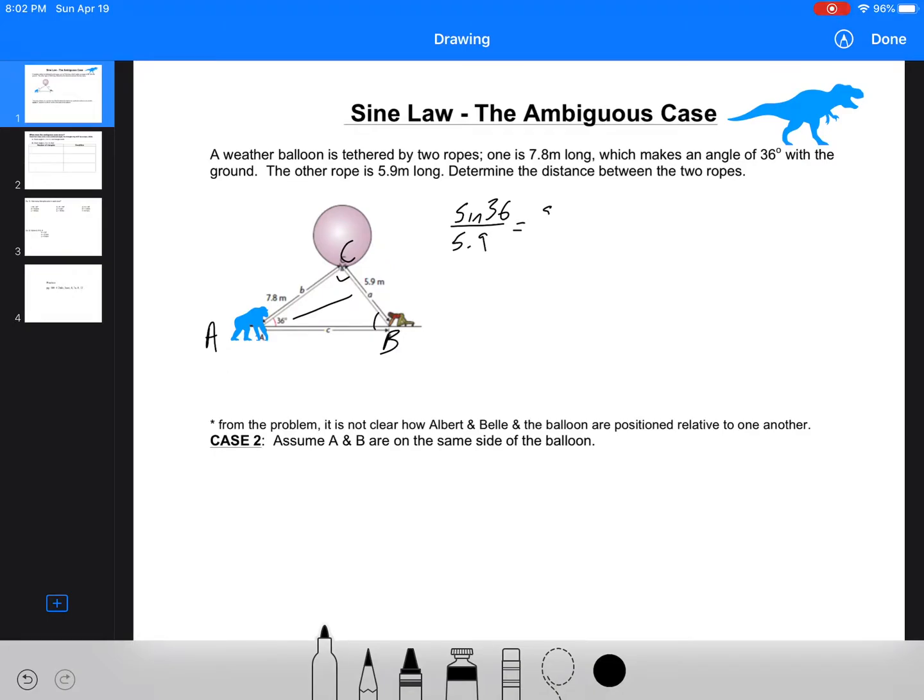Sine A over A would be sine 36 over 5.9 equals sine B over 7.8, and then we're going to get B equals the sine inverse of 7.8 times sine 36 over 5.9. So B, we're going to get sine 36 times 7.8 equals, that's 4.6 divided by 5.9. That's 0.77, and now we're going to take the inverse. We're going to get about 51 degrees, almost right on.